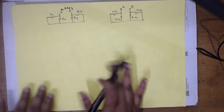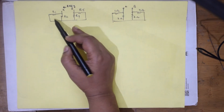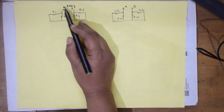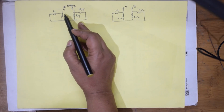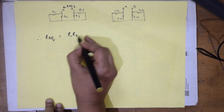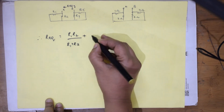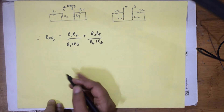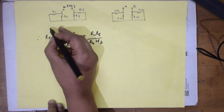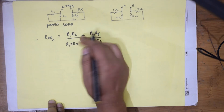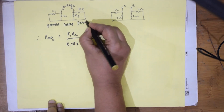Step two: find R_equivalent. To find R_eq, short circuit the voltage source and measure the resistance from A to B. When you short circuit the voltage source, R1 and R2 become parallel, and that combination is in series with the parallel combination of R4 and R5. Therefore: R_eq = (R1×R2)/(R1+R2) + (R4×R5)/(R4+R5).